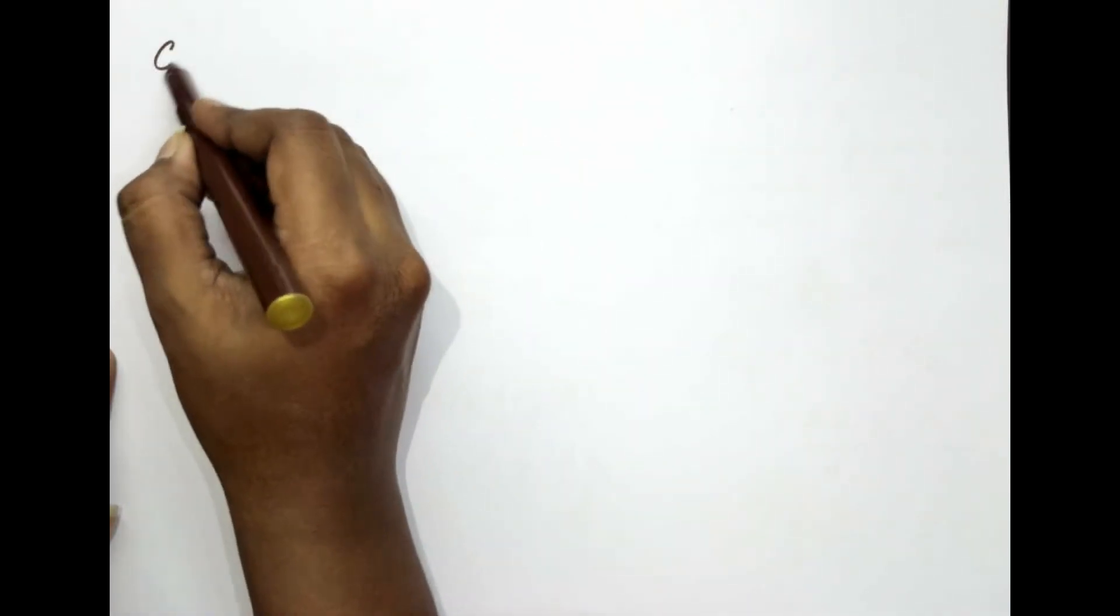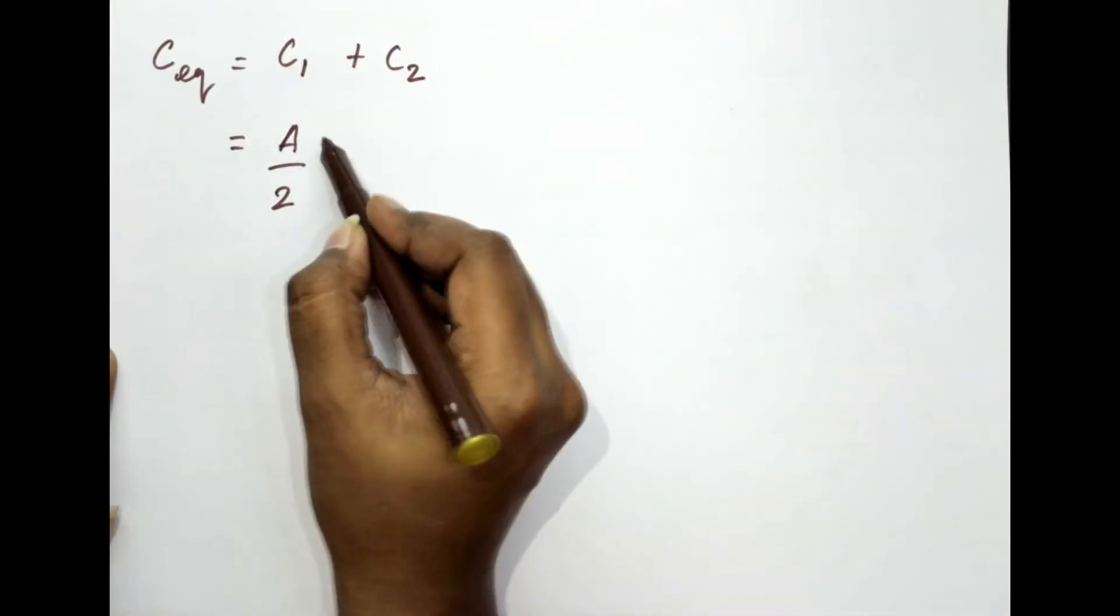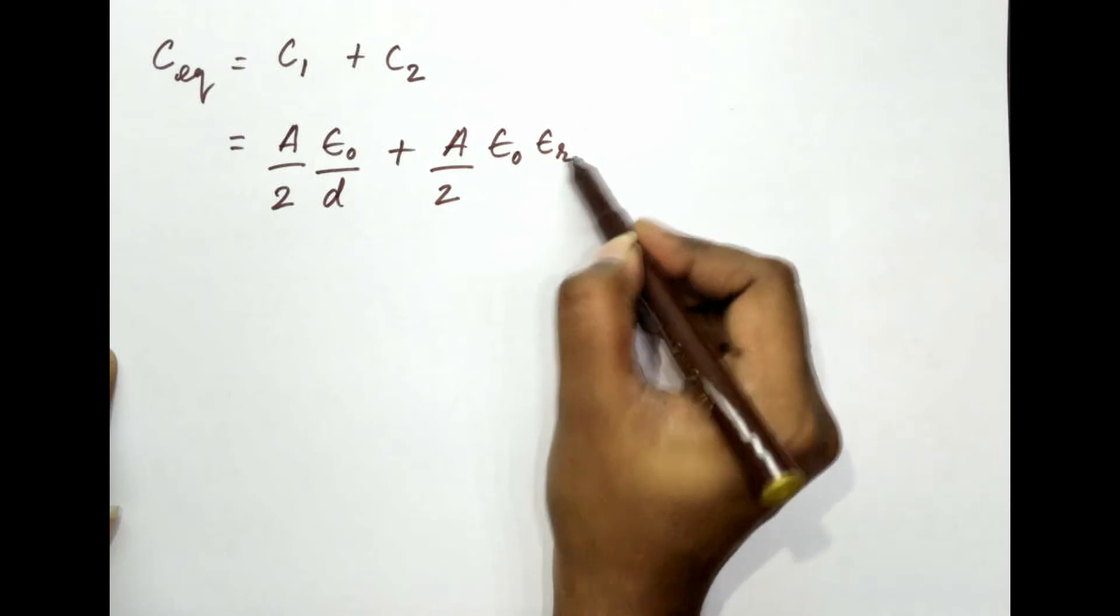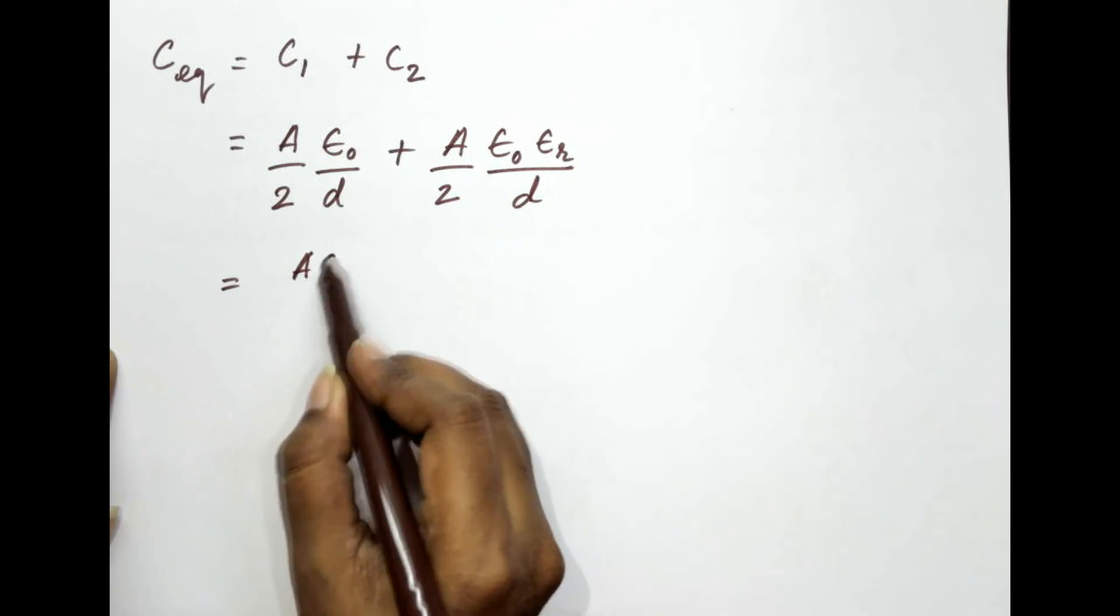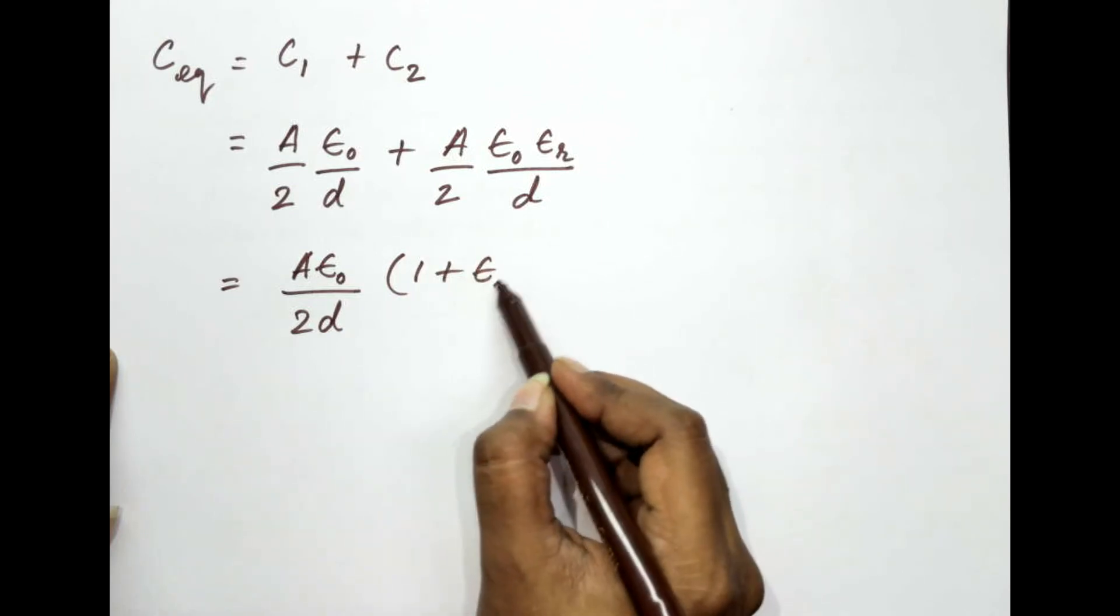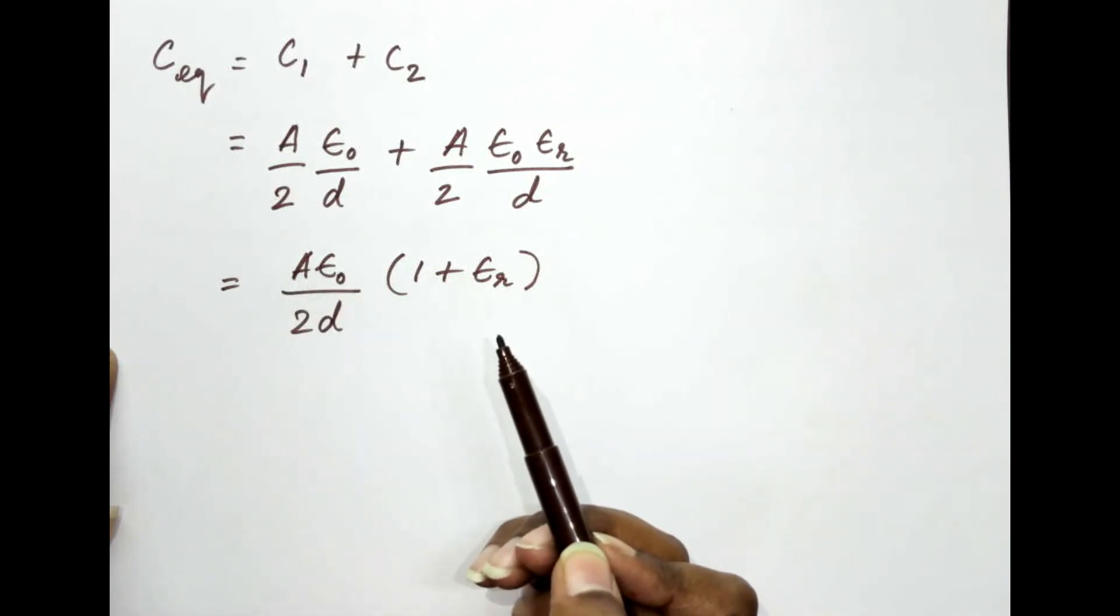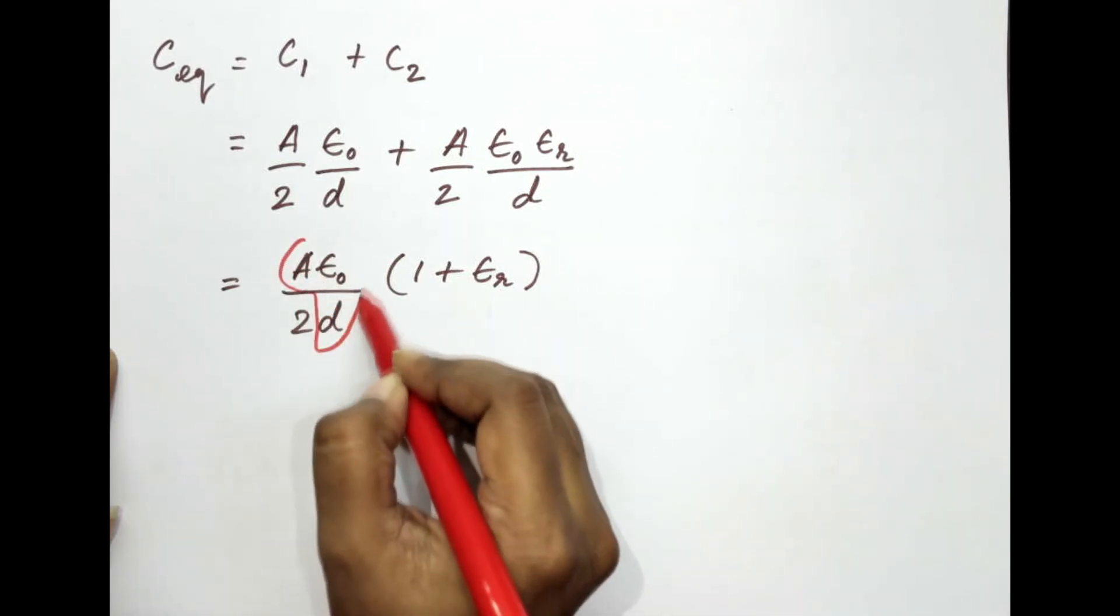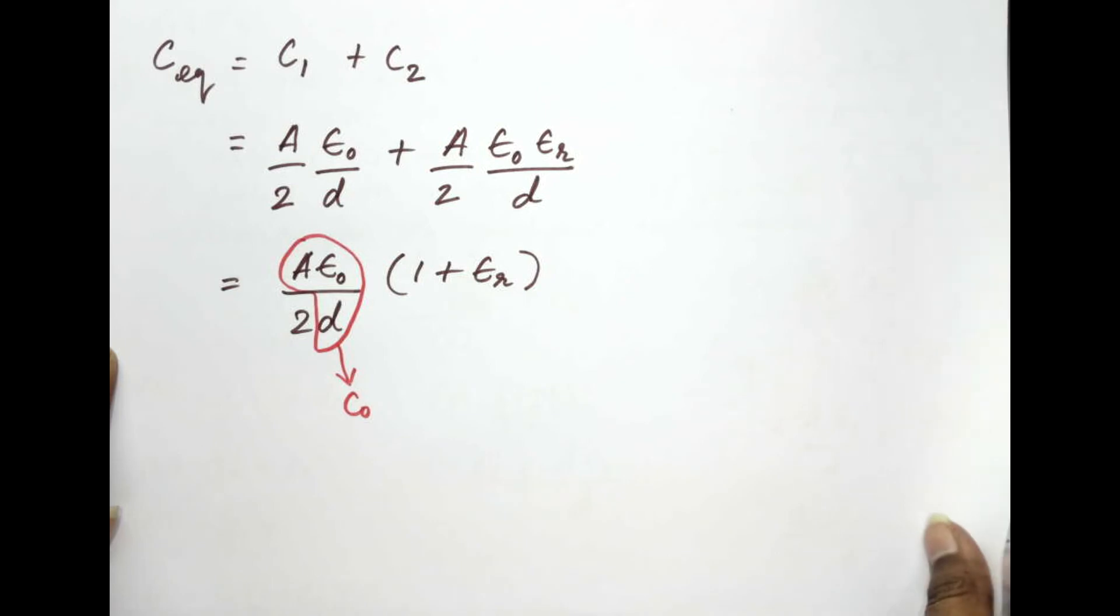So far we have C equivalent which is C1 plus C2 and we have noted that down as A by 2 epsilon 0 by D plus A by 2 epsilon 0 epsilon r by D. Now what can we take common here? We can take A epsilon 0 by 2D common and we are left with 1 plus epsilon r. Now what is A epsilon 0 by D? We have noticed this down in the very beginning here. A epsilon 0 by D is C0. This is the part of the capacitance for figure 1.